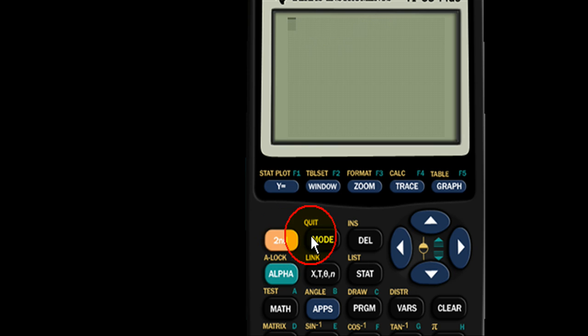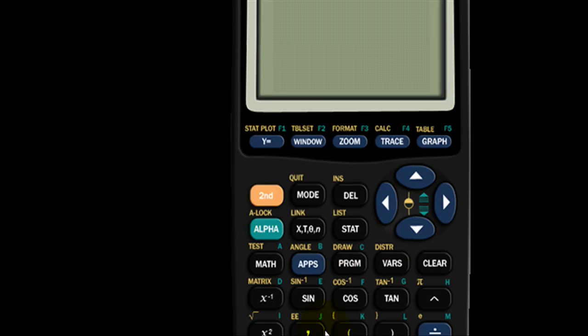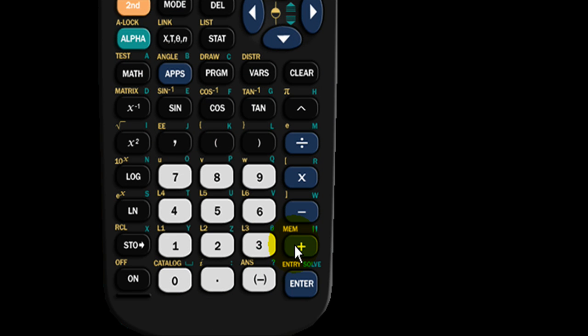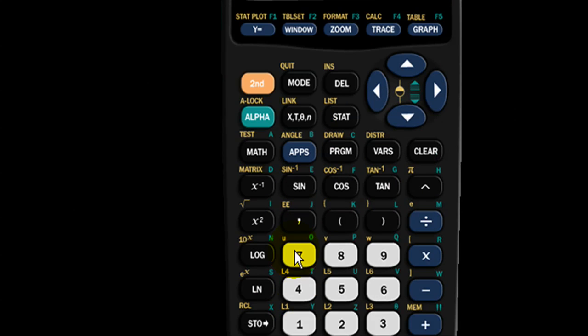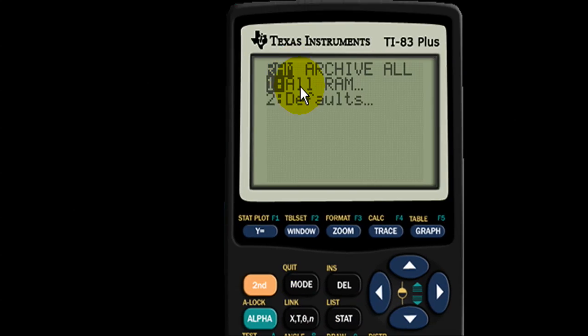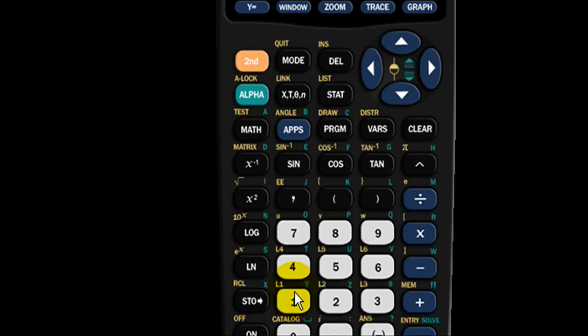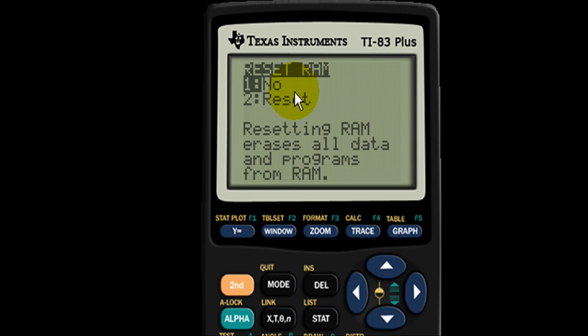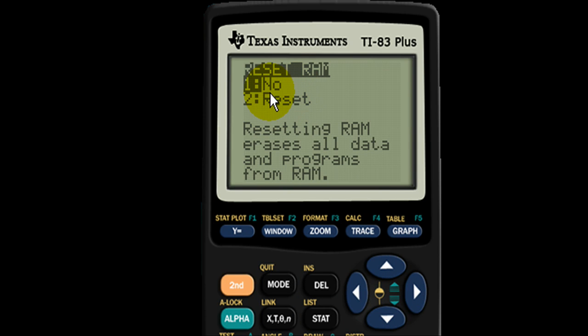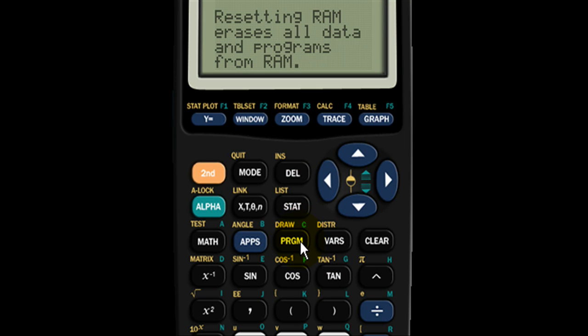Now what if I delete the RAM like my teacher asked me to by going to second plus for mem, second mem, and then resetting my RAM by hitting seven and then deleting all RAM by hitting one and then resetting the RAM by hitting two. As you can see it says resetting RAM erases all data and programs from RAM.